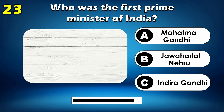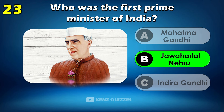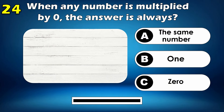Who was the first Prime Minister of India? Jawaharlal Nehru. When any number is multiplied by 0, the answer is always 0.